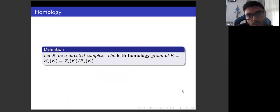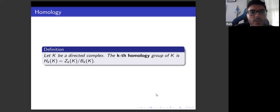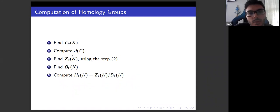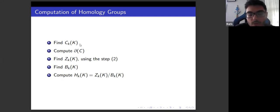Homology is a tool of topology which counts the holes of shapes. We learned chains, cycles, and boundary groups. Now we use these tools to define homology and calculate homology groups. In homology, we look for cycles that cannot bound anything. Thus, we define the k-th homology group as the quotient of the cycle group by the boundary group: H_k equals Z_k divided by B_k. The steps are: first find the k-chain groups, then compute the boundary of that chain, use this to find the k-cycle group and k-boundary group, and finally compute the k-th homology group by taking the quotient of these two groups.